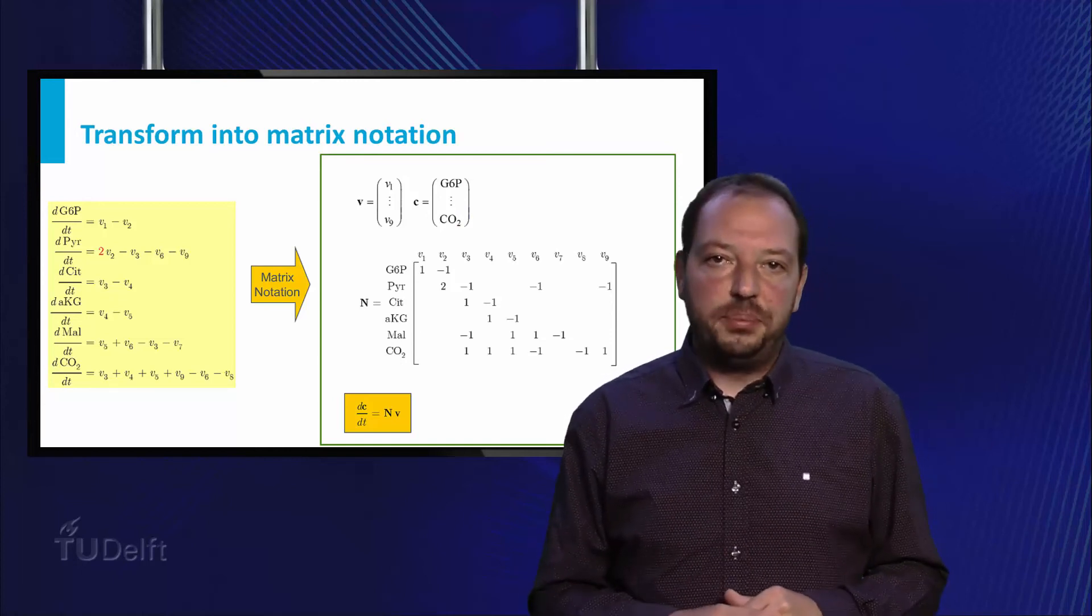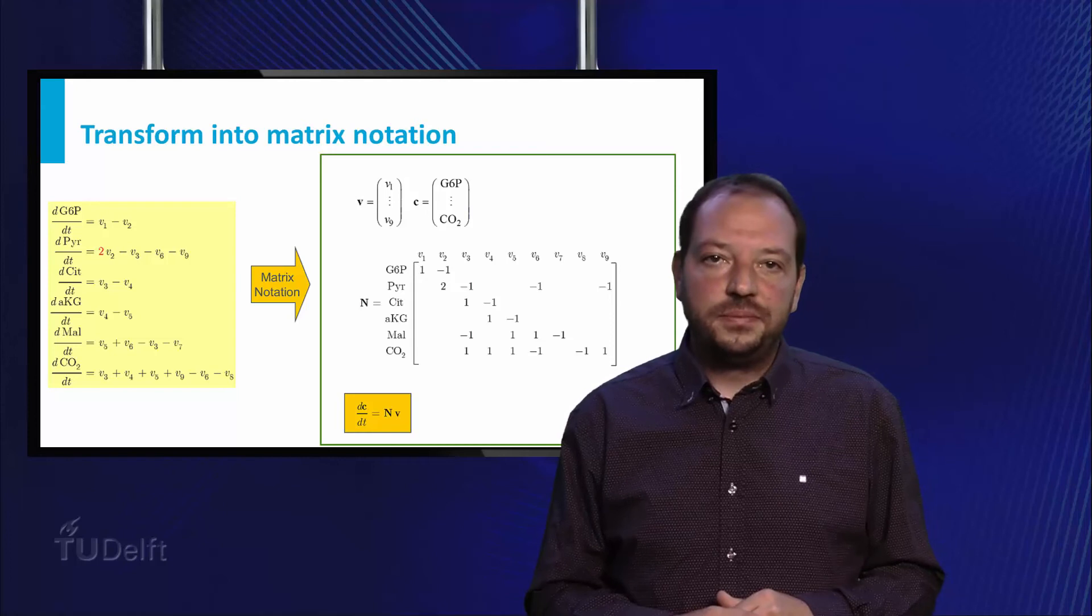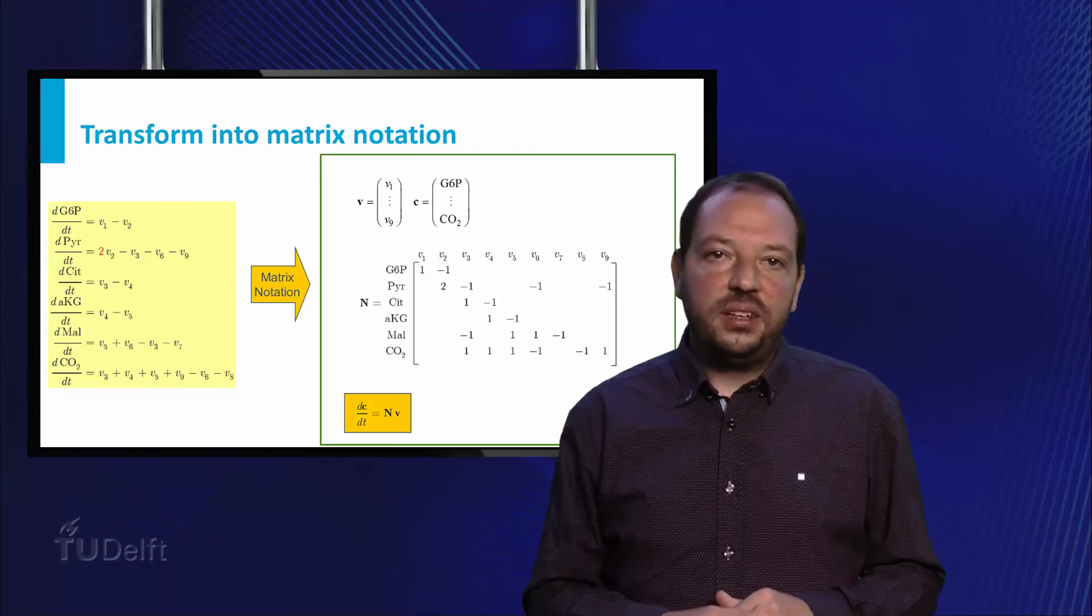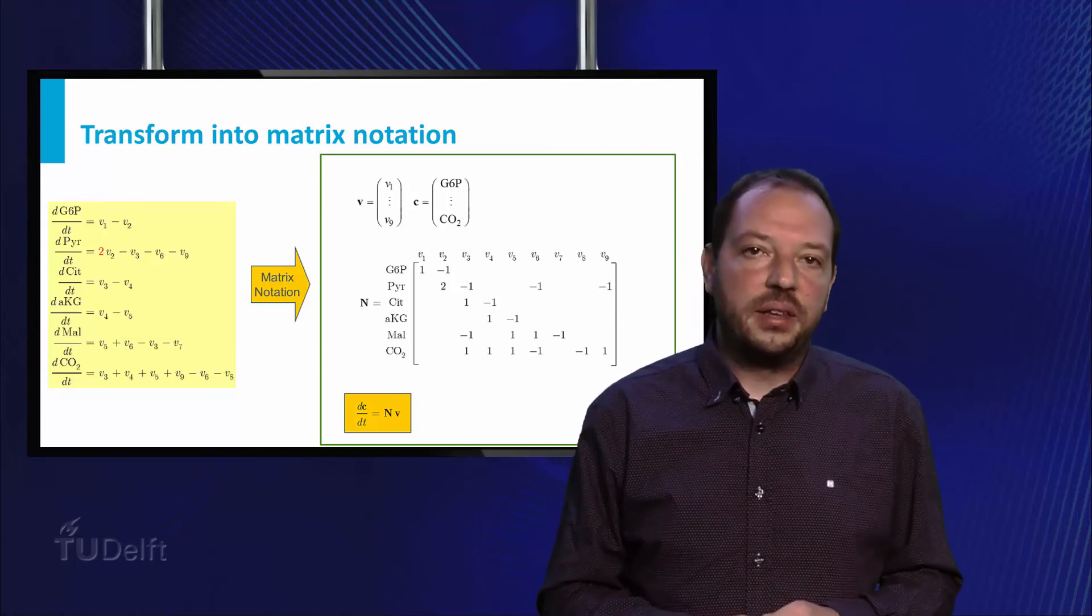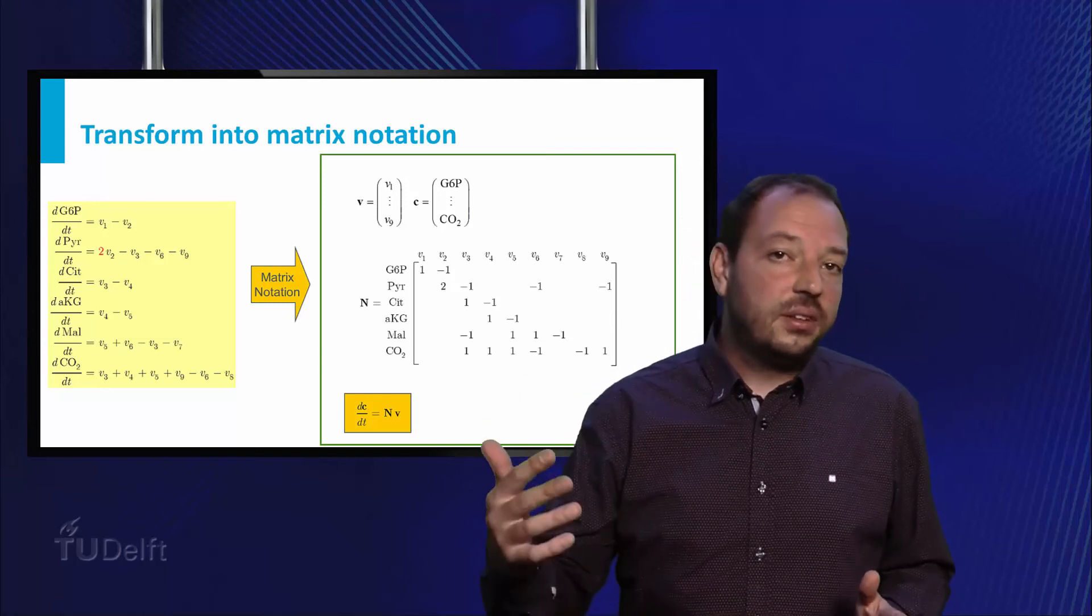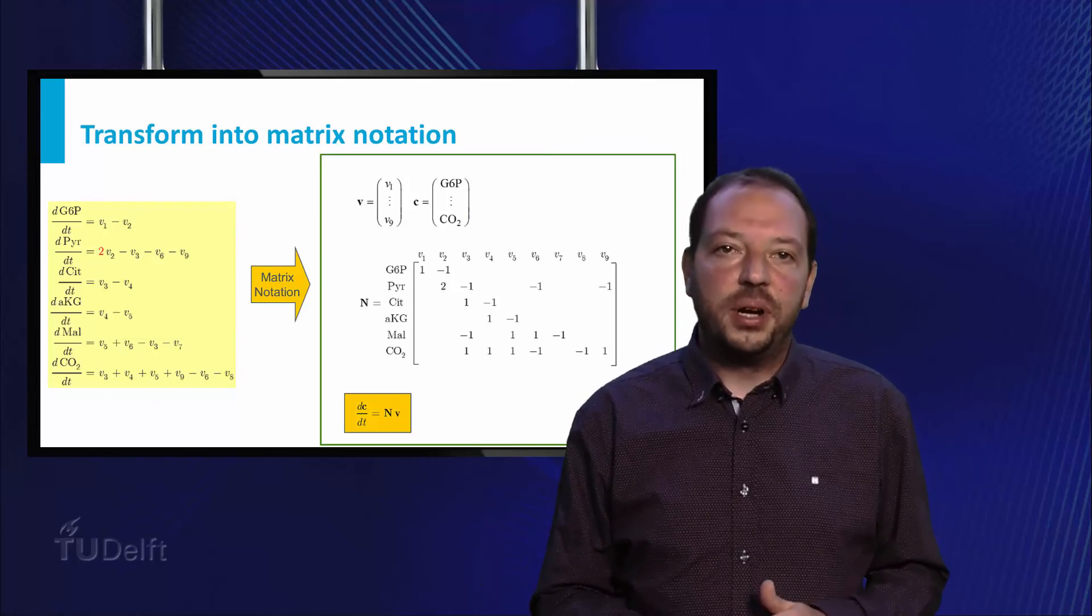This matrix is called the stoichiometric matrix and contains the metabolic network in a machine-readable format. Commonly, this matrix is represented by the letter N. With this at hand, we can rewrite all six equations using 0 equals N multiplied by V. The rest follows standard linear algebra approaches.